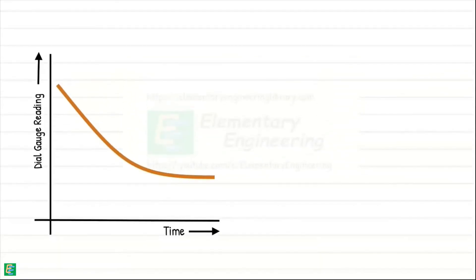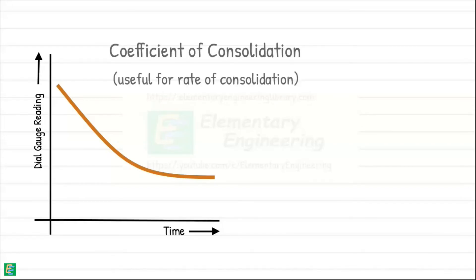Using this graph, we determine the coefficient of consolidation CV, which is useful for obtaining the rate of consolidation in the field, which means it tells us how fast a soil squeezes out water and gets denser under load.